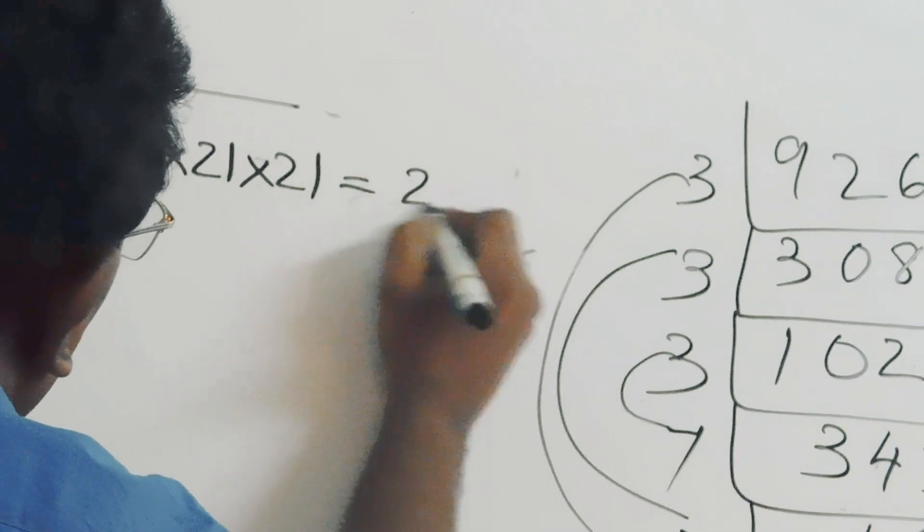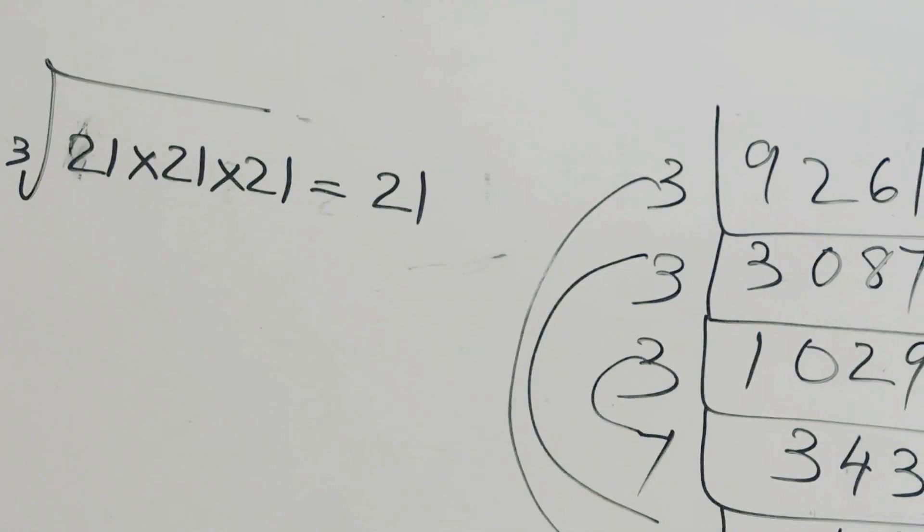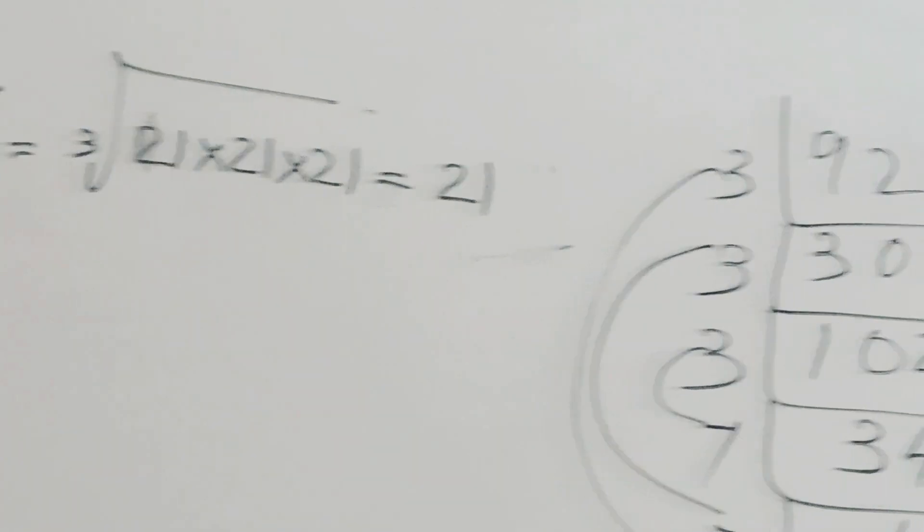Therefore, cube root of 9,261 equals 21. Then, we will do question number...